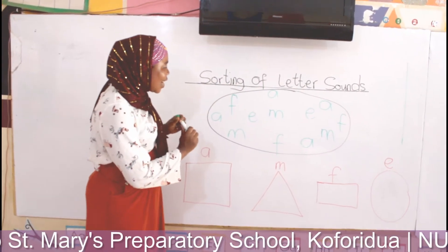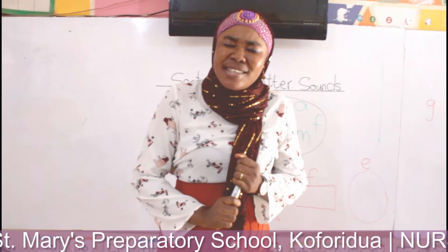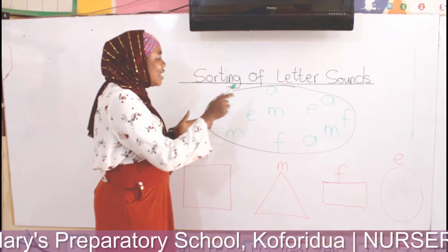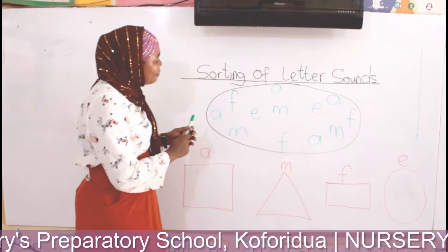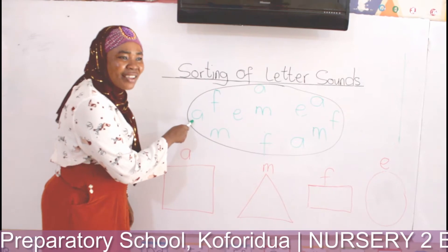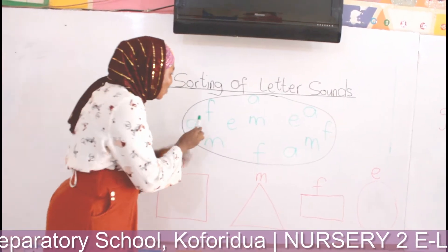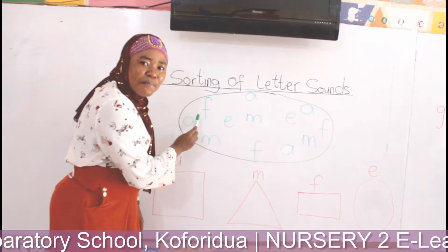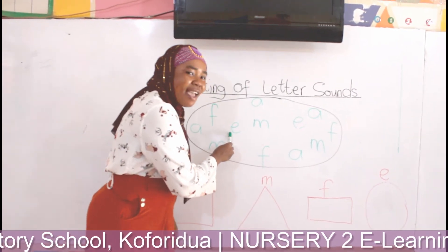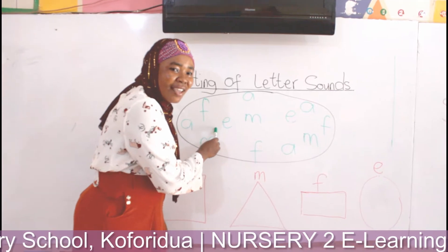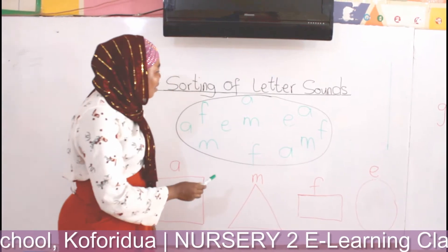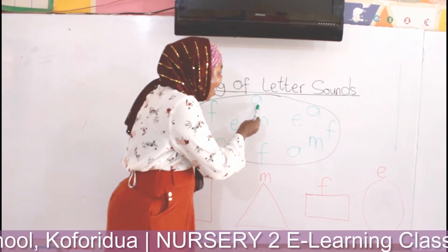Let's look at our letter sounds here. Do you remember our letter sounds? Yes — A, B, yes. We have them here. Let's identify them one after the other. Look at the first letter sound. What is the first letter sound here? A. Again, A. And look at the second one. F. Again — A, F. Another one — E. E. Then we have M. M. Now we have M, A, E.